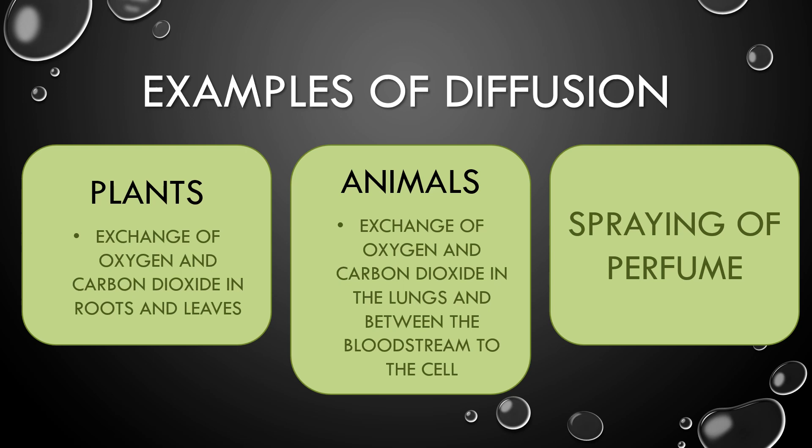Examples of diffusion can occur in plants and animals. In plants, oxygen and carbon dioxide are exchanged in roots and leaves. In animals, exchange of oxygen and carbon dioxide occurs in the lungs and between the bloodstream and cells. Spraying of perfume in a room is also an example of diffusion.